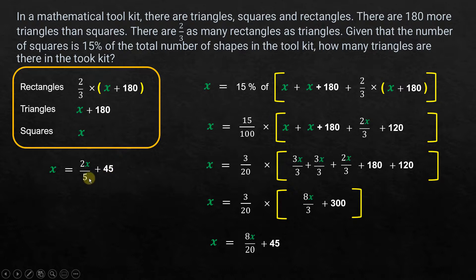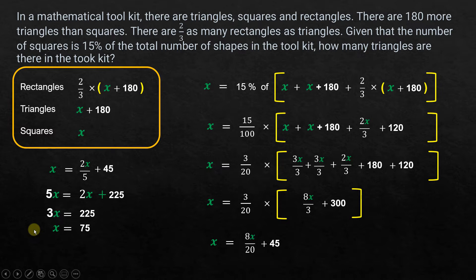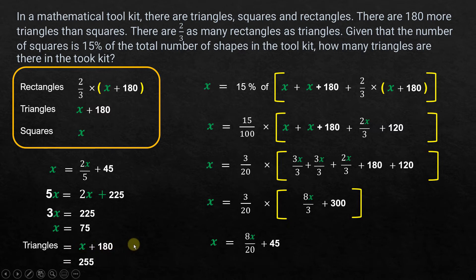To eliminate the denominator 5, multiply both sides by 5: 5x equals 2x plus 225. Bringing 2x to the left: 5x minus 2x equals 225, so 3x equals 225, giving x equals 75. That is the number of squares. Since triangles equal x plus 180, triangles equal 75 plus 180, which is 255.